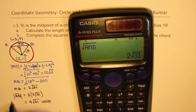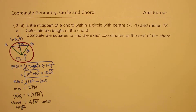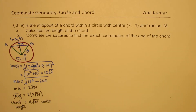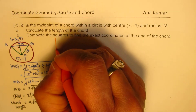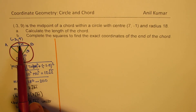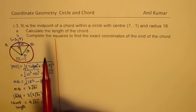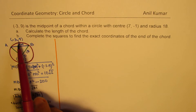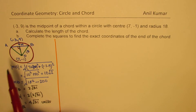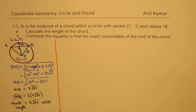So that is the chord length — that is the first part. Now in the second part, we need to complete the squares to find the exact coordinates of the end points of the chord. There are different ways to do it. What we will do here is find the equation of the circle, find the equation of line AB, and then find their points of intersection.